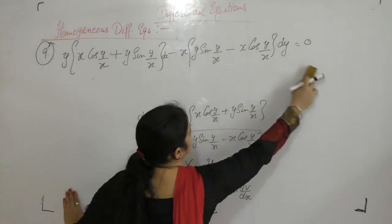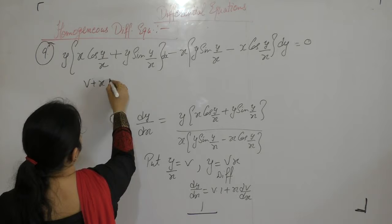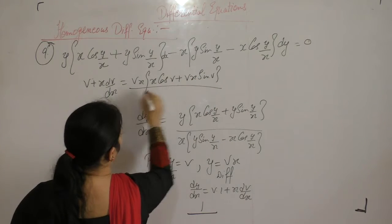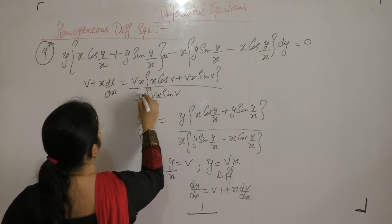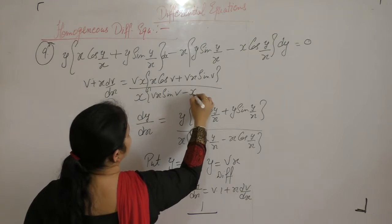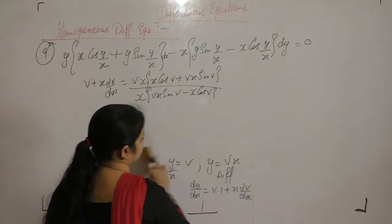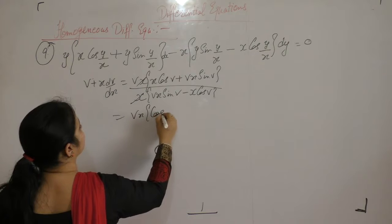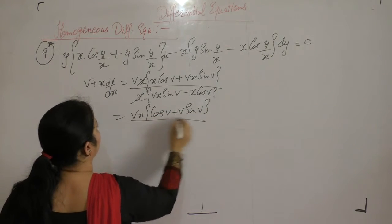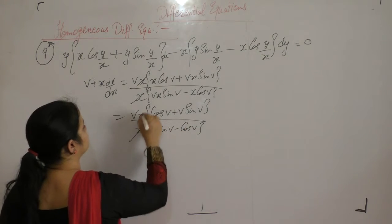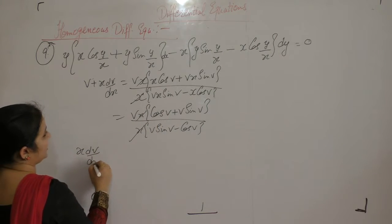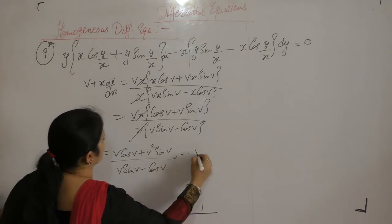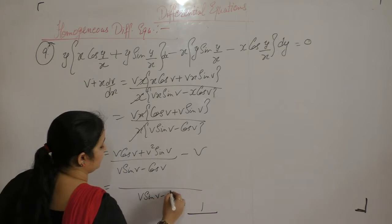Substituting dy upon dx equals v plus x dv upon dx, and y equals vx: the numerator becomes vx times cos v plus vx times sin v and denominator becomes vx sin v minus x cos v. After cancelling x, we get cos v plus v sin v upon v sin v minus cos v. So x dv upon dx equals v cos v plus v squared sin v upon v sin v minus cos v, minus v.